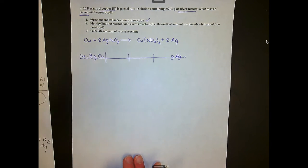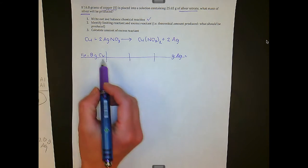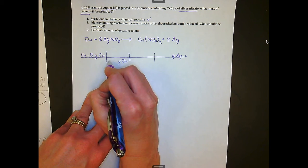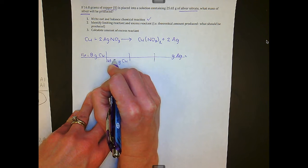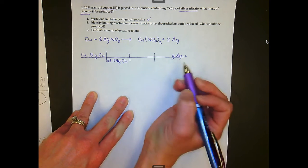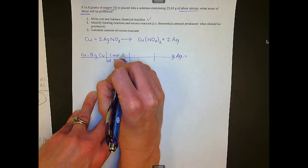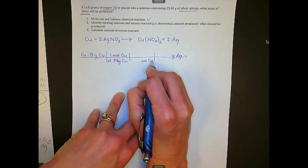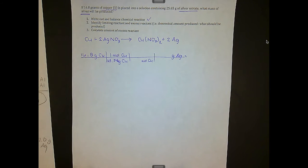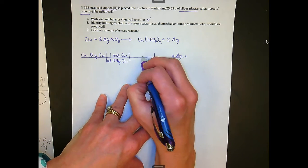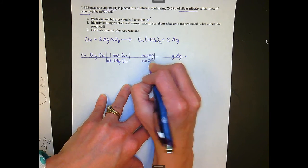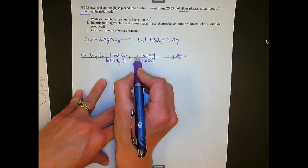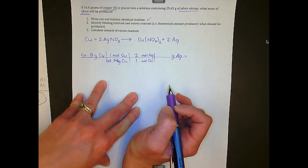First, we drop our units — grams of copper. We fill in the molar mass, which is 63.546 grams, and we know that represents one mole of copper. Then we drop down moles of copper. This is the step students often get confused on — this is where we transition over to silver using a mole ratio. When we see mole over mole, we look to the coefficients. There's a coefficient of 2 in front of silver and a coefficient of 1 in front of copper.